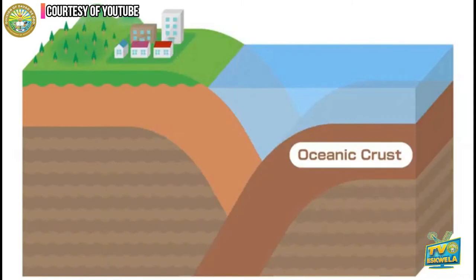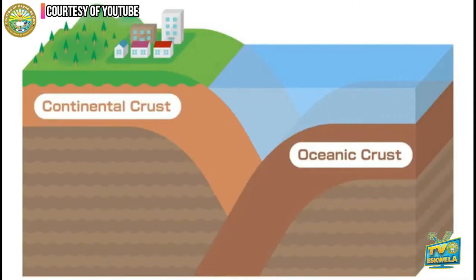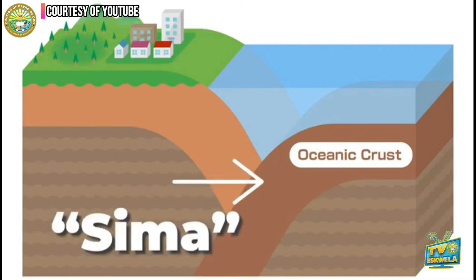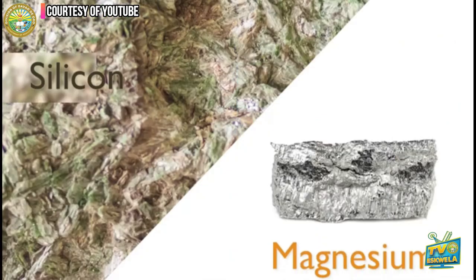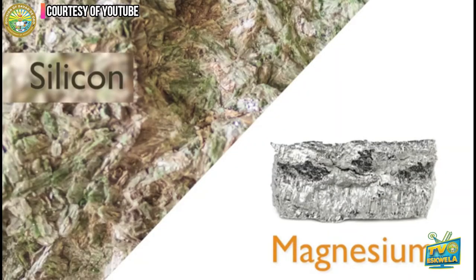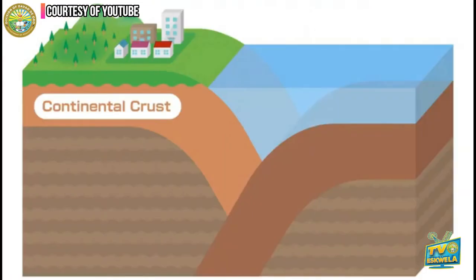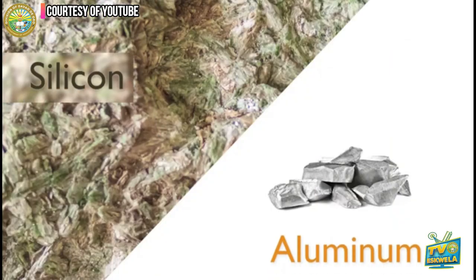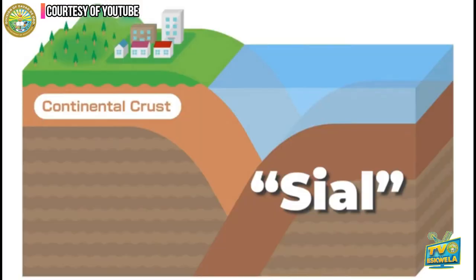Plates are divided into two kinds: oceanic crust and continental crust. Oceanic crust is made up of crust called sima that exists below the ocean. Sima gets its name because it's made from silicon and magnesium, it's made up of basalt, and it is heavier. Continental crust exists mainly below land, is made up of silicon and aluminum, and is therefore named sial. It is made up of granite, and it is lighter.